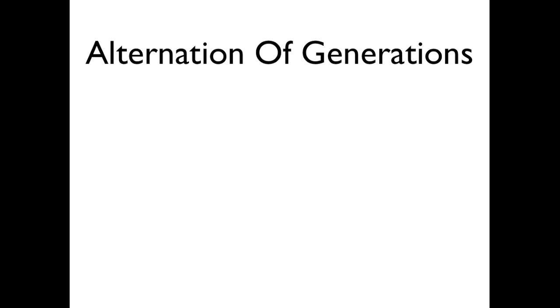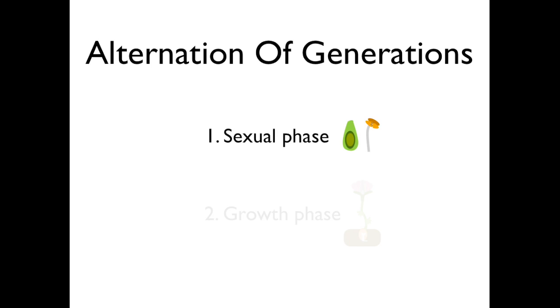The alternation of generations is a phrase that describes the life cycle of a plant. The life cycle of a plant is divided into two phases: a sexual phase and a growth phase. Because this is a cycle, you can start at any point, but we are going to start with the sexual phase.